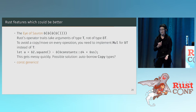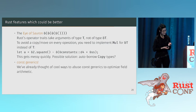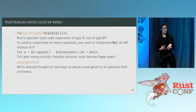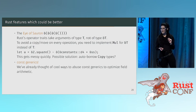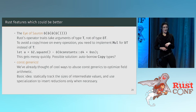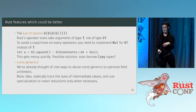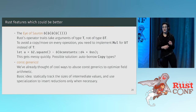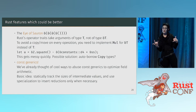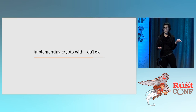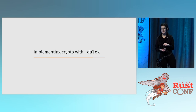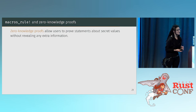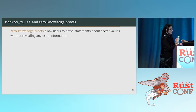Another thing that would be really cool, which we know is coming and we're excited about, is const generics. We've already thought of really cool ways to use const generics to optimize the field arithmetic. The basic idea would be to statically track the sizes of the intermediate values of these field elements, and use specialization to insert reductions when necessary. It would automatically detect: 'you have three bits of carry space and you've done two adds already — let's do a reduction now' instead of forcing users to know when to do it by hand.